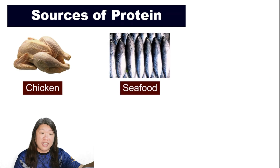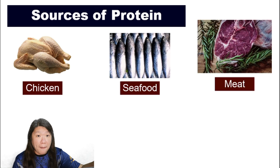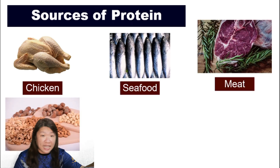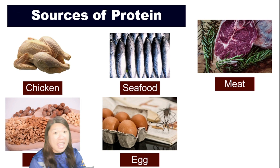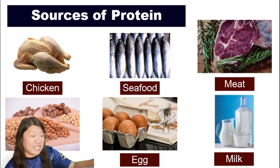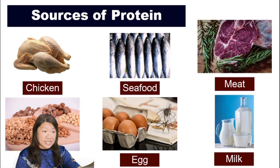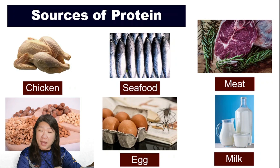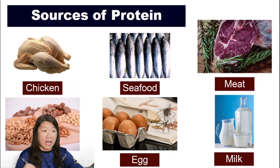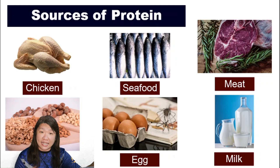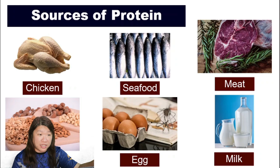Let's look at some sources of protein. We have chicken, seafood, meat, nuts, eggs, and milk. Almost all meats from any form of animals are protein, and then eggs, milk, and nuts — those are a few other examples of protein.